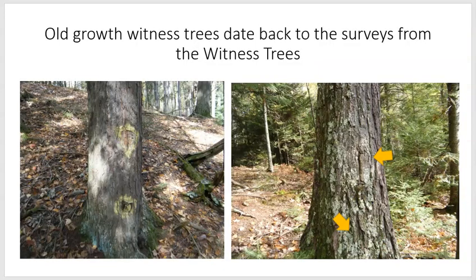Old-growth witness trees date back to the original surveys and can be a little tricky to see. Taking some images from Van Vliet hemlocks, we can see on the far right, marked by yellow arrows, the old scars on this hemlock. Sometimes modern surveyors will actually open those scars up with an axe and blaze them with various colors of paint, making it easy for the traveler or historian to locate these unique, culturally modified trees that serve as artifacts from our past. Some of these trees are still standing along section corners and meander lines along the Manitowish Chain for you to explore.